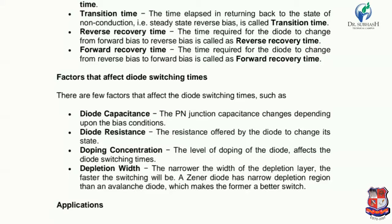Every electrical component has some amount of capacitance. The capacitance of the PN junction changes based on the biasing condition. The second factor is the resistance offered by the diode to change its state. In reverse bias, the diode resistance is higher, and in forward bias, the resistance is lower.